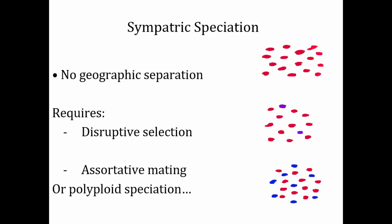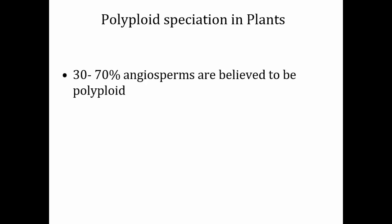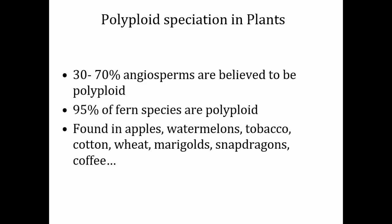Another option is polyploid speciation. This is probably very important in plants — it's estimated that about 30% to 70% of all flowering plants are polyploid, and over 95% of fern species are polyploid. If you like to eat apples, watermelons, tobacco, cotton, or enjoy marigolds, snapdragons, or coffee, all of these species have been formed through polyploid speciation events. So lots of things we're familiar with have been formed due to polyploid speciation.